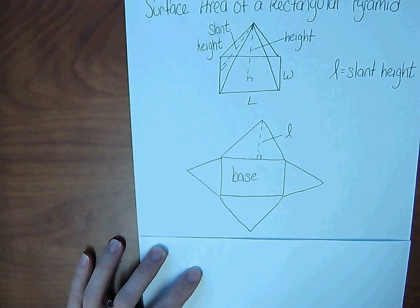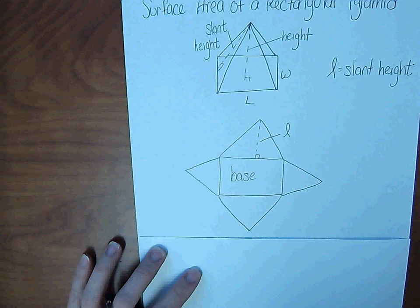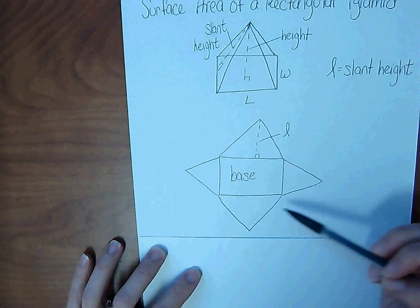If you can't remember formulas, you could always break the pyramid up into its shapes, find the area of each one, and then add it together.